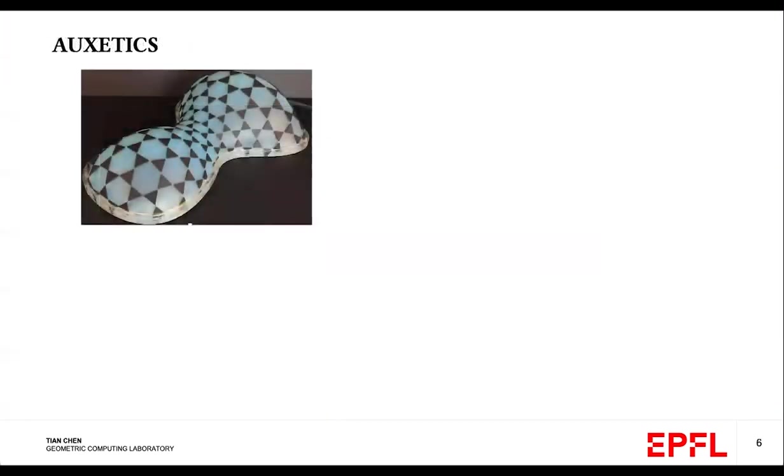This is an example of a deployable structure built using auxetic material. So what exactly is an auxetic material? In traditional materials, when stretched in one dimension, the length typically decreases in the other dimension. And we can quantify this using a term called Poisson's ratio, which is typically above 0.